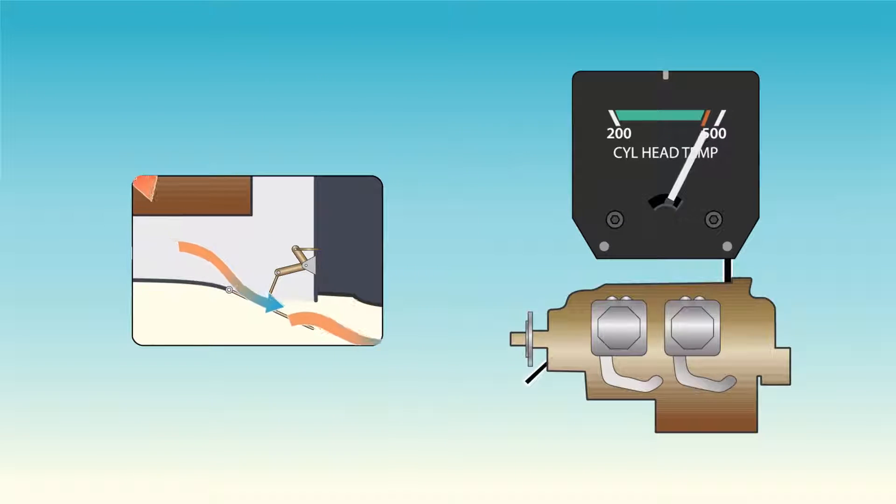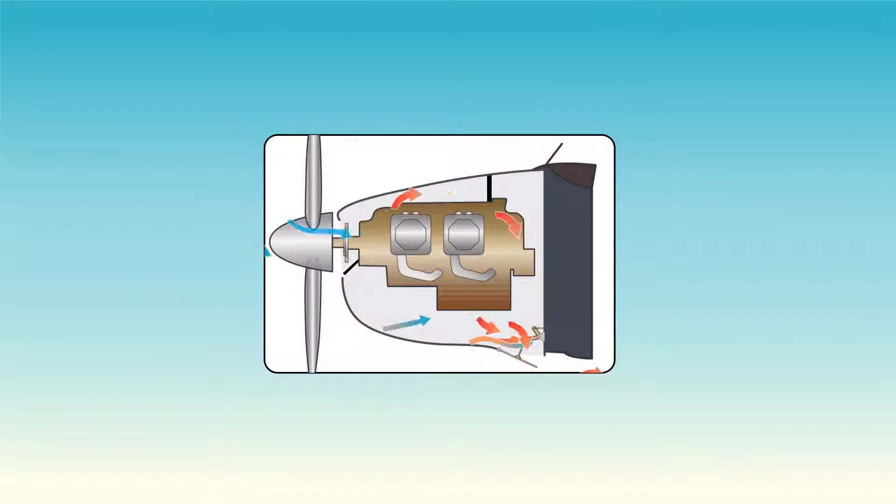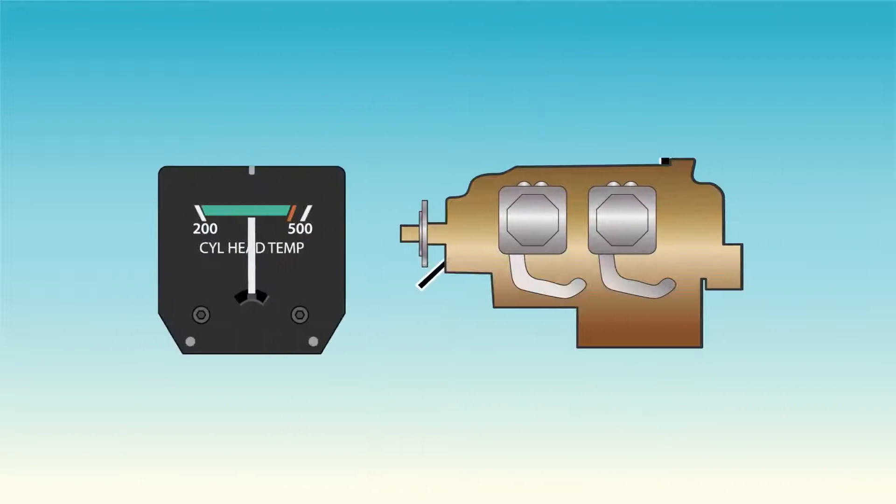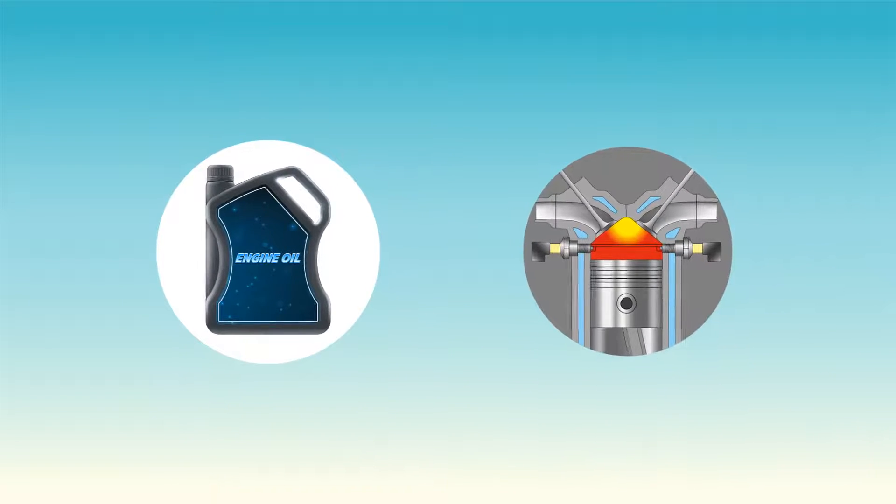If the engine temperature is high, the cowl flaps can be opened to permit a greater flow of air through the system, thereby decreasing the engine temperature. Operating the engine at higher-than-designed temperatures can cause loss of power, excessive oil consumption, and detonation.